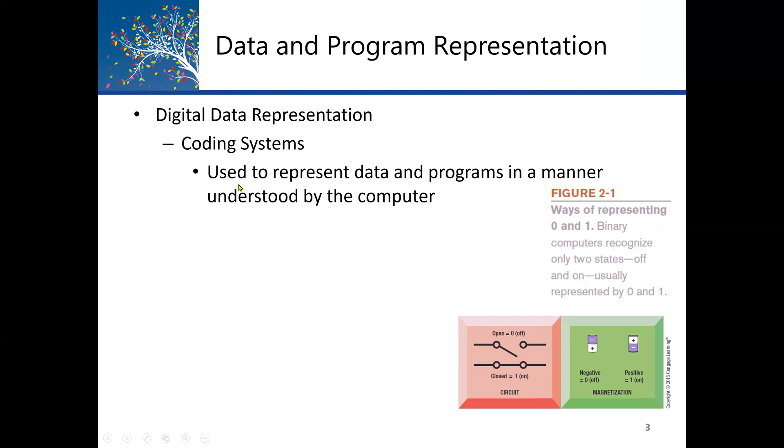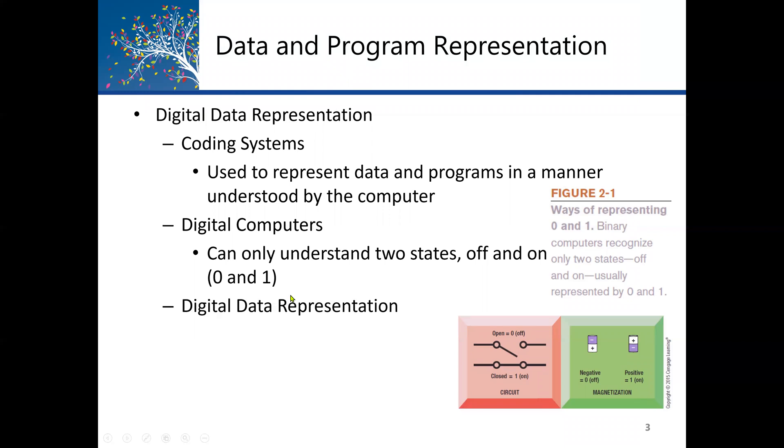A binary computer only recognizes two states, either off or on. The coding normally is used to represent data and programs in a manner that must be understood by the computer. A digital computer can only understand two states, either off or on. Off represents zero and one represents on. Normally we use the term machine language. Machine language is binary number systems, zeros and ones.